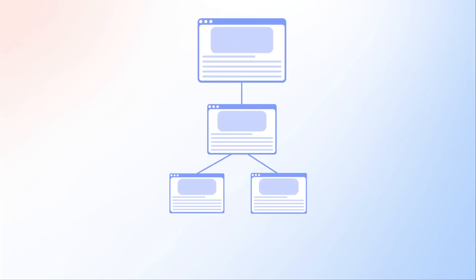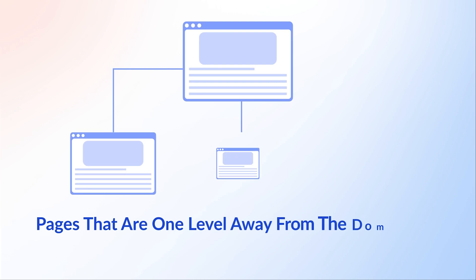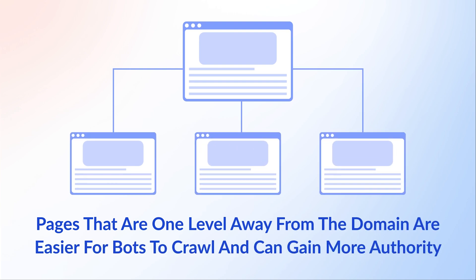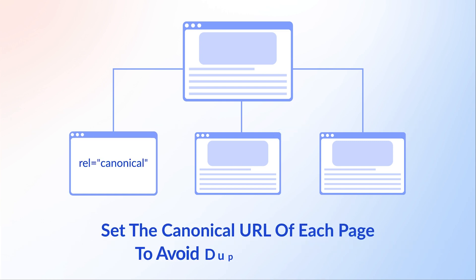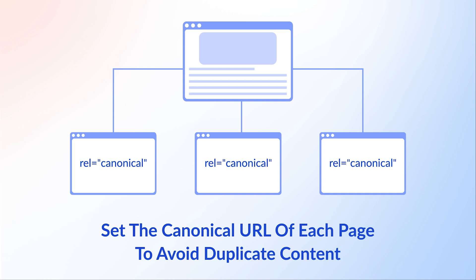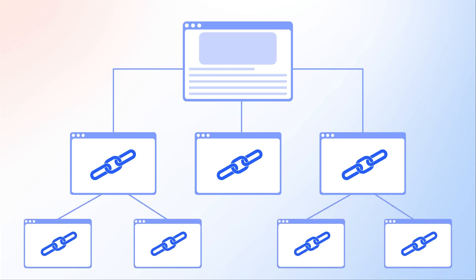Avoid using multiple subcategories in your site hierarchy. Typically, the further away a page is from your homepage — meaning the more clicks it takes to reach it — the less authority it gains from the domain when published. Conversely, pages one level away from the domain are easier for bots to crawl and gain more authority. Consider using tags instead of multiple subcategories to help users navigate the structure, and remember to set the canonical URL of each page so you don't end up with duplicate content. If you do have pages more than one level deep, use backlinks and internal contextual links to pass authority to those pages.